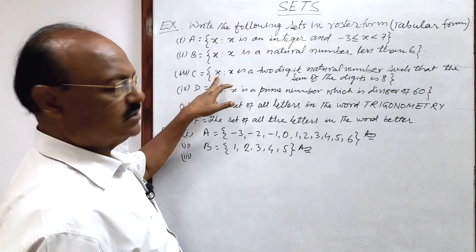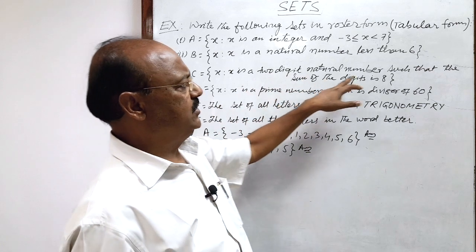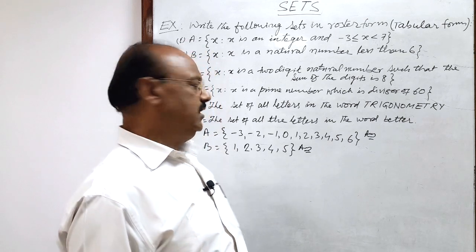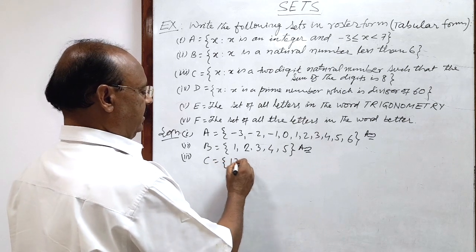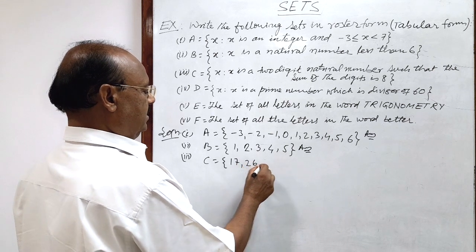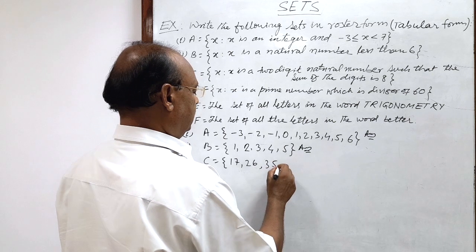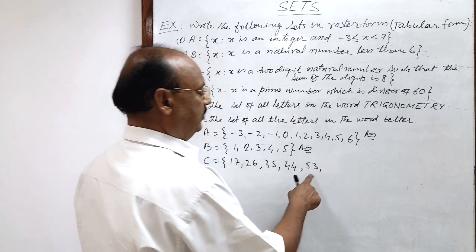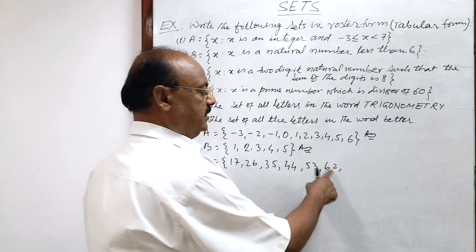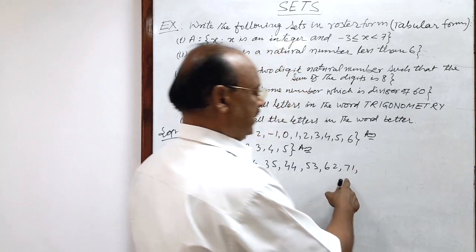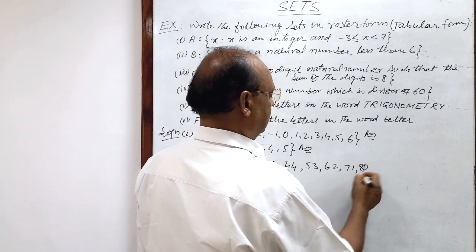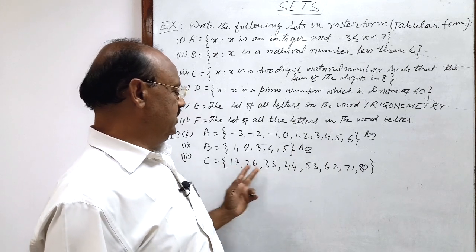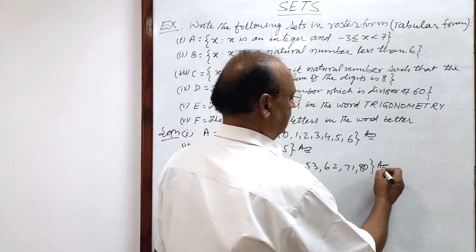Set C such that set C consists of element x such that x is a two-digit natural number such that the sum of the digits is 8. Two-digit number and sum of the digits is 8. So set C will consist of elements 17 so that 1 plus 7 is 8, 26 because 2 plus 6 is 8, 35 because 3 plus 5 is 8, 44 because 4 plus 4 is 8, 53, 62, 71, and 80. So this is a collection of two-digit numbers such that sum of these two digits is 8. This is the answer for the third question. Clear? Very simple.